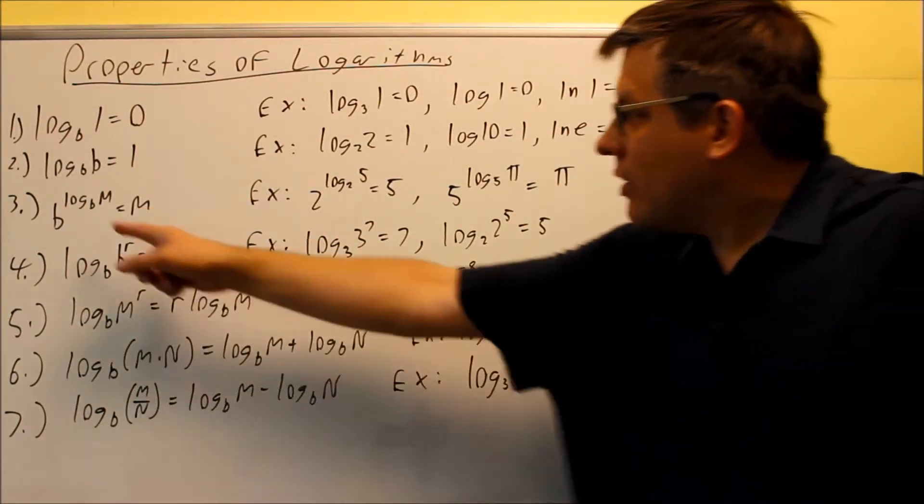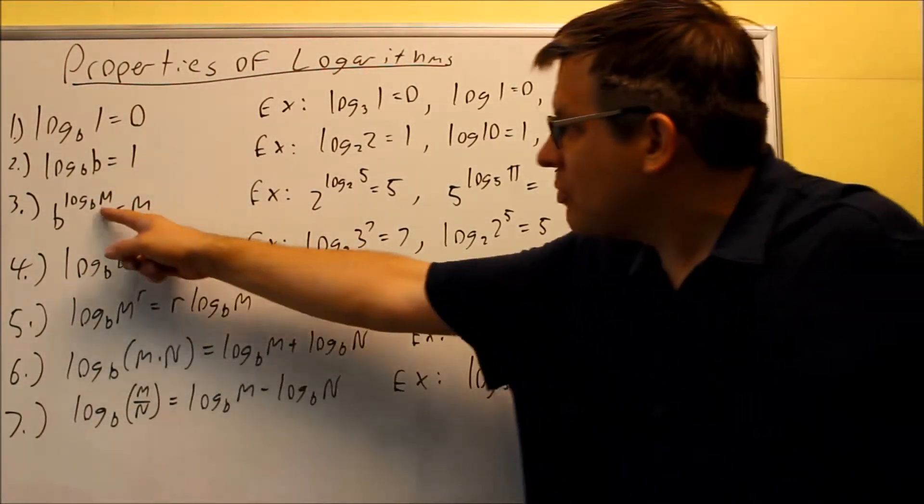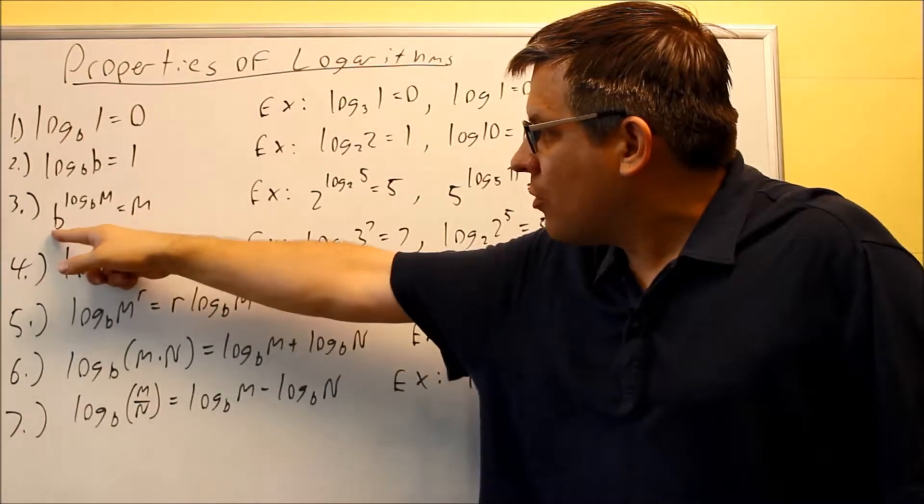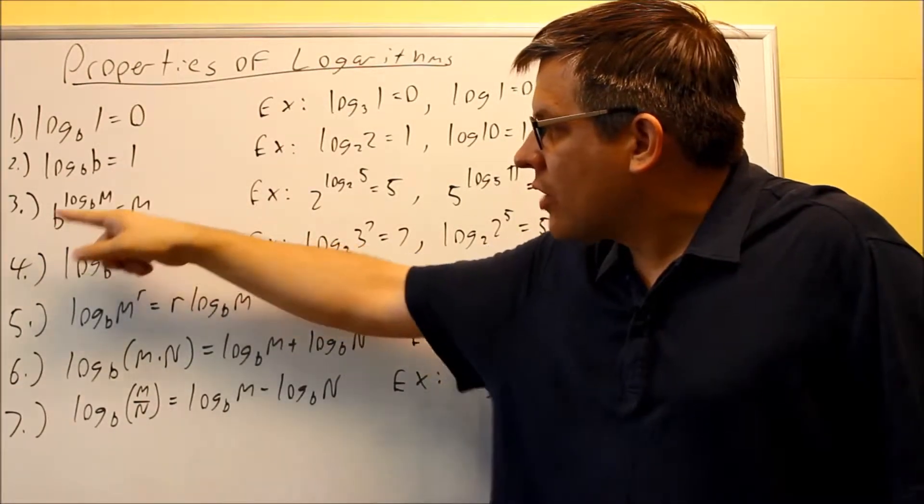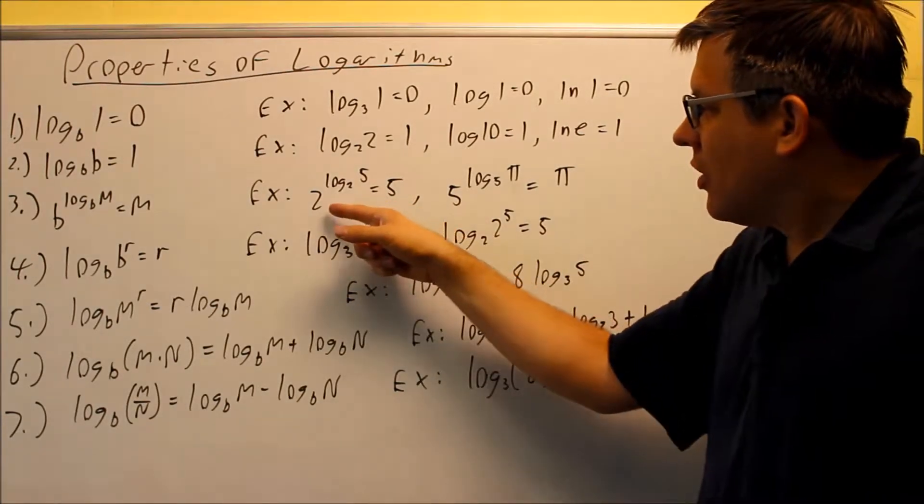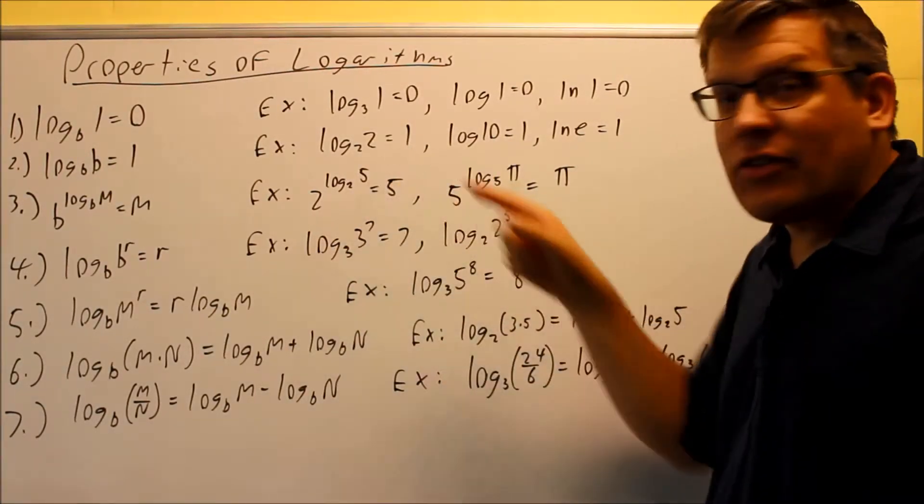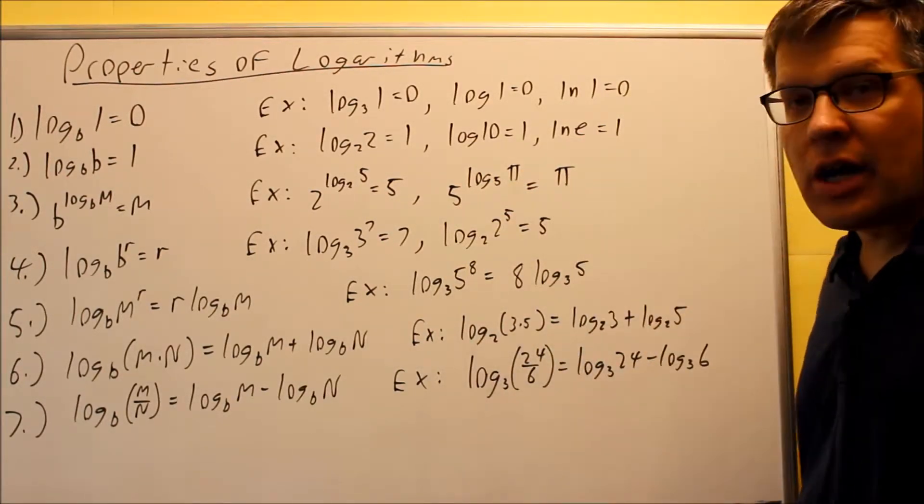Next property. The log, if it's part of an exponent and the base matches the one down below, then the logs cancel and you get the number that comes after the log. So for this example, these cancel and you end up with the 5 that was originally there. For this one, these two cancel, you get π.